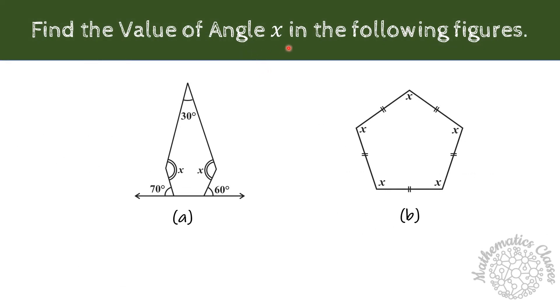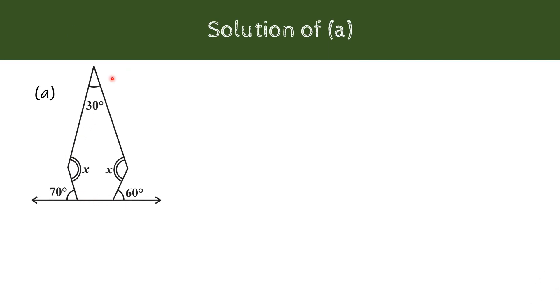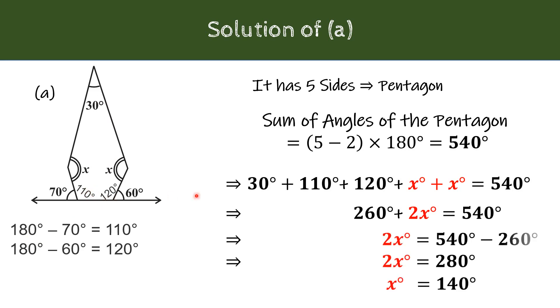We can also find the angle x using this property for the following figures. For part a, we know that this figure is made from 5 sides, so it is a pentagon. And, sum of the angles of a pentagon is 5-2 into 180 degree which is equal to 540 degrees. 70 degree and 60 degree are the linear pair. We can easily find these bottom angles by subtracting 70 and 60 from 180. So, this angle is 110 degree and here we get 120 degrees. Now, we can add all these angles together and equate it to 540 degree. After addition and solving for x, we can easily get x as 140 degrees.